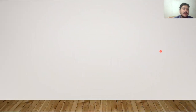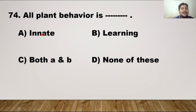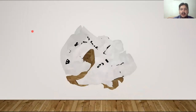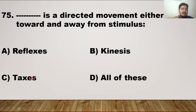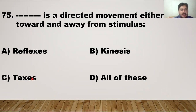MCQ number 74: all plant behaviors are innate in nature. For the last MCQ: taxes is a directed movement either toward or away from a stimulus — for example, positive phototaxis (toward light) and negative phototaxis (away from light). Kinesis is random movement. The right answer is option C — taxes.